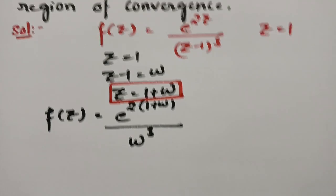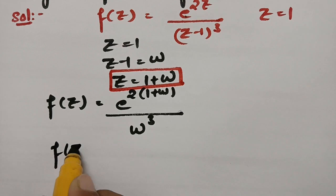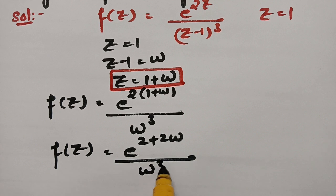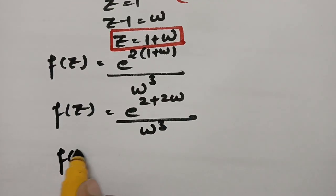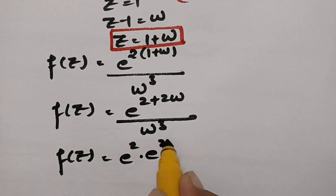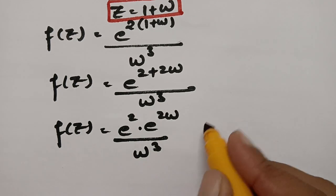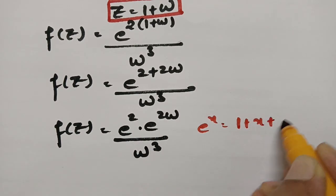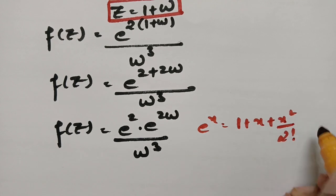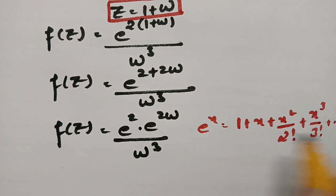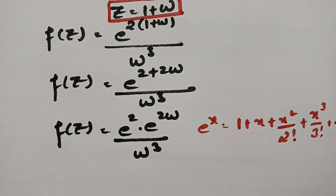Now we expand. This can be written as e^(2 + 2w) / w³, which equals e² · e^(2w) / w³. We use the standard expansion e^x = 1 + x + x²/2! + x³/3! + ... to expand e^(2w).